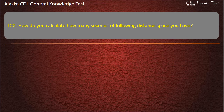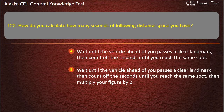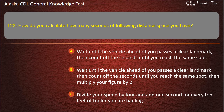Question 122. How do you calculate how many seconds of following distance space you have? Wait until the vehicle ahead of you passes a clear landmark, then count off the seconds until you reach the same spot; multiply your figure by 2; or divide your speed by 4 and add 1 second for every 10 feet of trailer. Answer: Wait until the vehicle ahead of you passes a clear landmark, then count off the seconds until you reach the same spot.